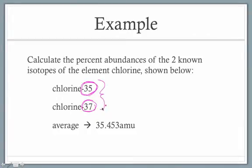And these 35's and these 37's are going to be the masses of our two isotopes. So these are what we're going to plug in for our M1, and this is what we're going to plug in for our M2.